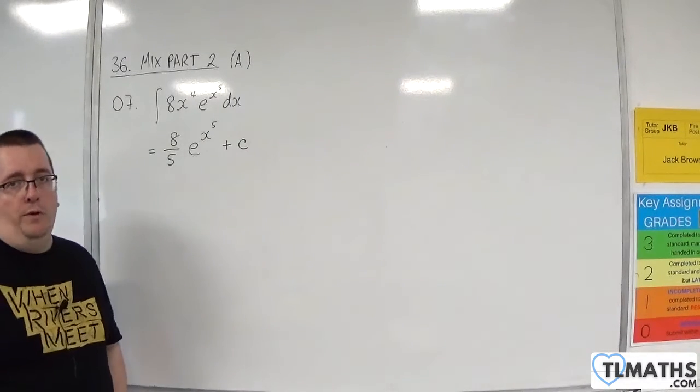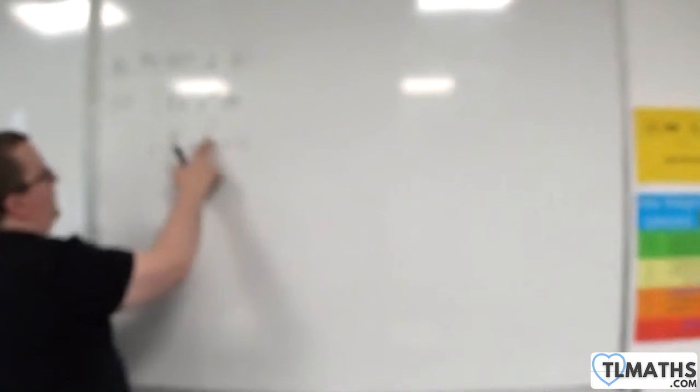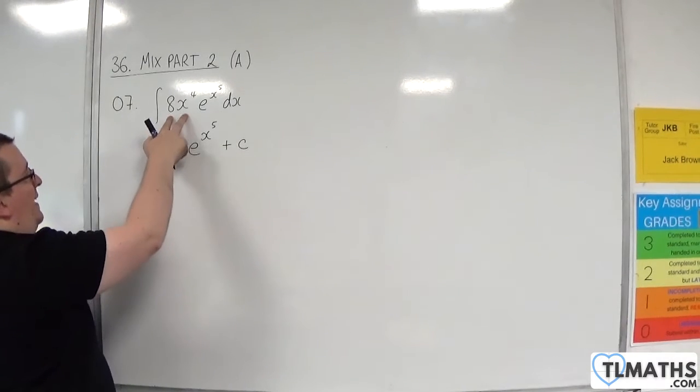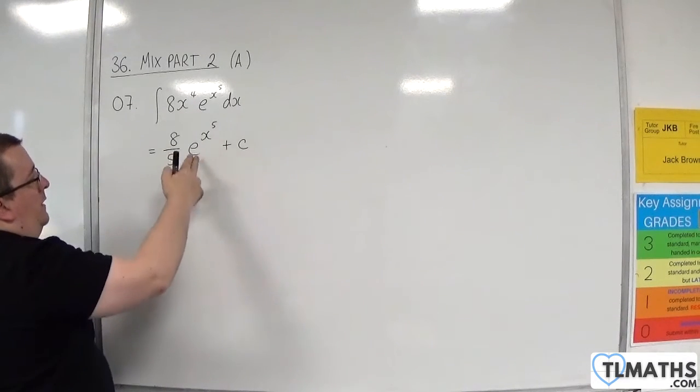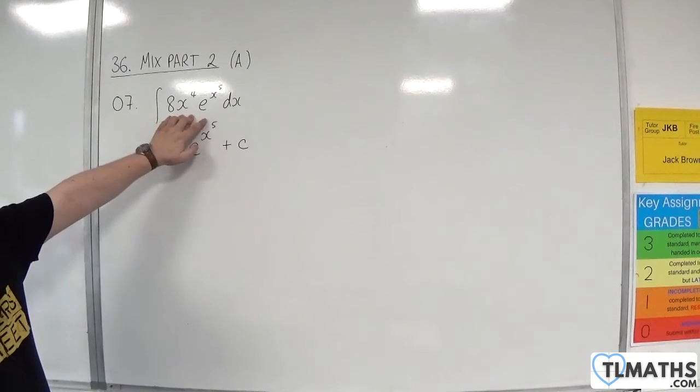It's actually that straightforward. Because if you differentiate that back, the derivative of the inside is 5x to the 4, which multiplies with 8 fifths to make 8x to the 4. E differentiates to itself, and so that differentiates back to that.